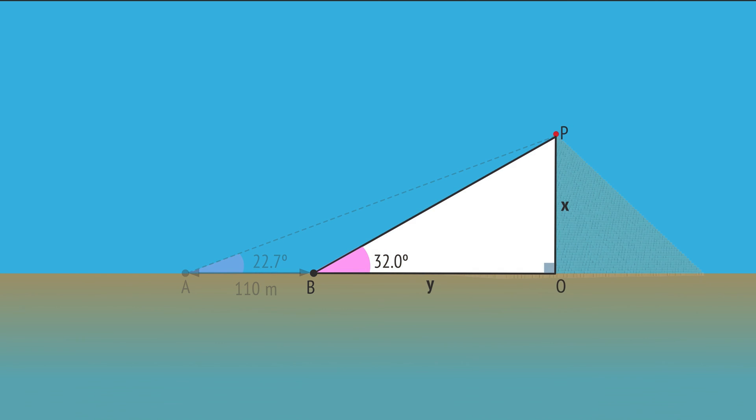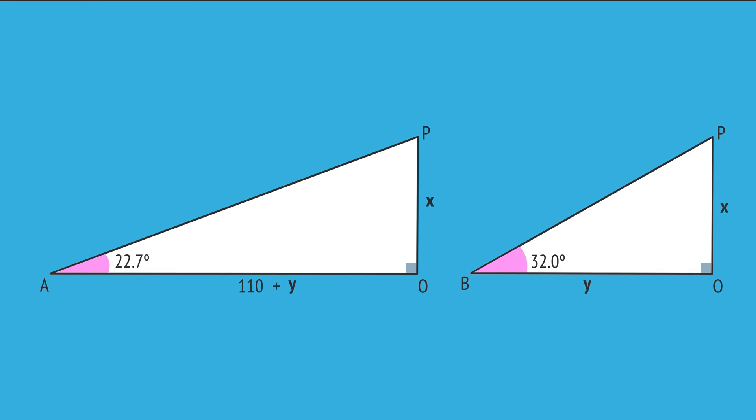We can draw this right angle triangle, which includes the height x and the distance y to the observer at B. And we can draw this right angle triangle, which also includes the height x and the distance to the observer at A, which is 110 plus y. In each of these triangles, we can use the tangent ratio for the known angle. And by multiplying each ratio by its denominator, we get these two expressions for the height x.